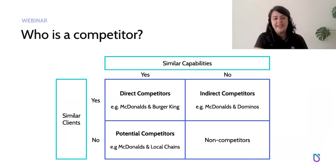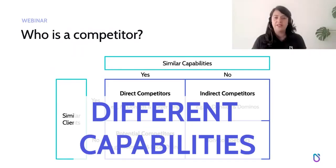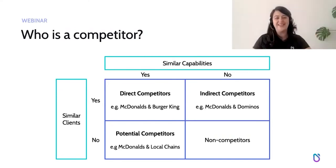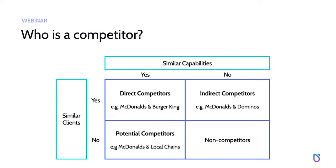Then we have companies that share our same audience but don't have the same capabilities — they may have a different product. McDonald's and Domino's share the same audience of fast food lovers, but one offers pizza and the other a burger. Paradoxically, before you choose between McDonald's or Burger King, you actually choose whether you want pizza or a burger — so you consider indirect competitors first, then the direct ones.